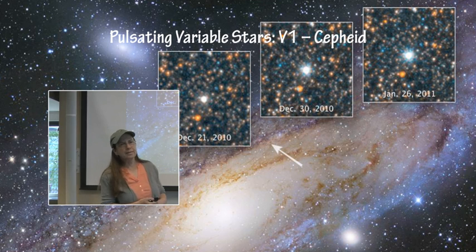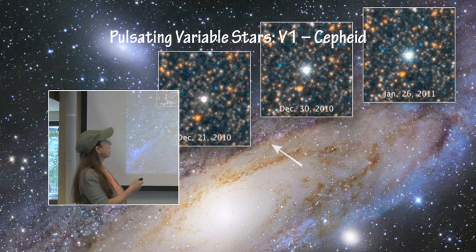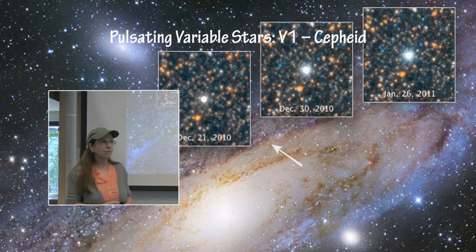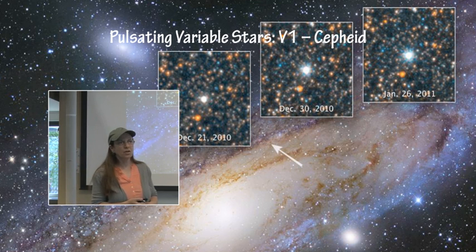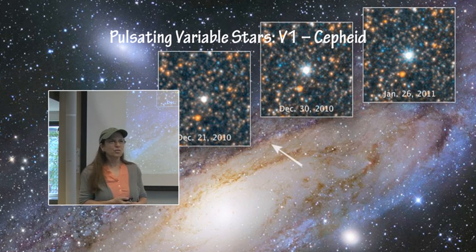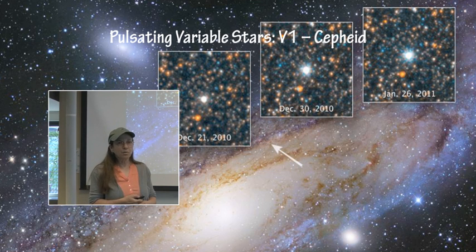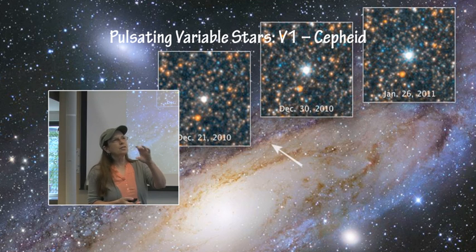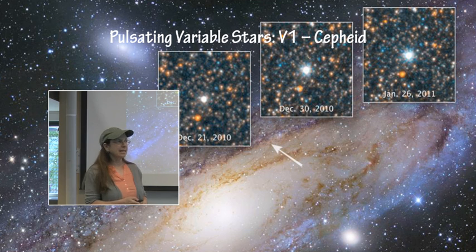V1 is a Cepheid variable star located in the Andromeda galaxy. This Hubble image shows the range in magnitude change of V1. This is the variable star that effectively made the universe a very large place — Edwin Hubble discovered the period of this Cepheid, determined its distance, and discovered it was in a galaxy far away. This revealed that the small smudges in the sky were not just nebulae within the Milky Way, but entire other galaxies.